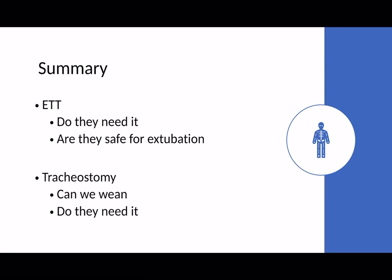In summary: when a patient has an endotracheal tube, your first question should always be is it in the right place, then do they need it, and if so are they safe for extubation. With a tracheostomy, think about a stepwise wean and whether they need it long term — if it's for secretion management, consider other approaches. It's really a multidisciplinary team decision, and it's always worth involving chest physios, nursing staff, and speech and language therapists who can advise on the best course of action.